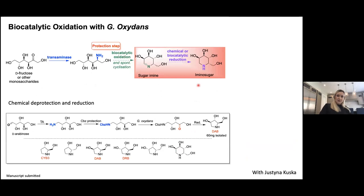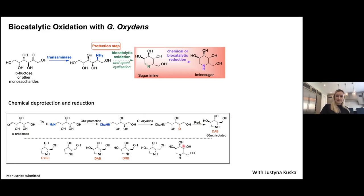Despite the problems, we have submitted this manuscript. We have a sequence where we can take something like D-arabinose, install the amine, protect — which annoys us massively — then use G. oxidans to selectively oxidize, followed by chemical reduction. In many cases we get selectivity and can isolate household name amino sugars in pretty good conversions and very good isolated yields.